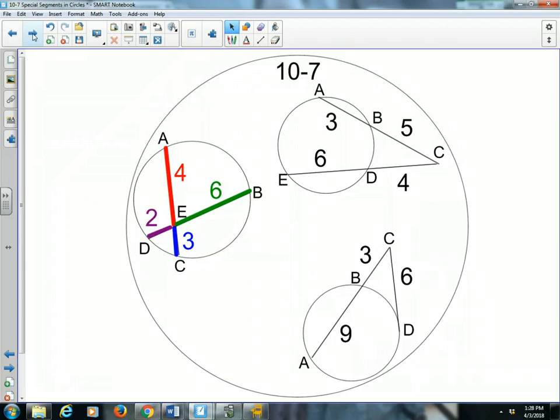When two chords, we're looking at this circle right here, when two chords intersect in a circle, notice how when the two chords intersect, it really makes four different segments: D-E, A-E, B-E, and C-E.